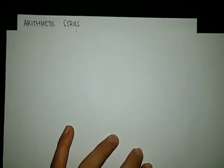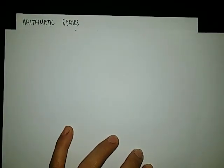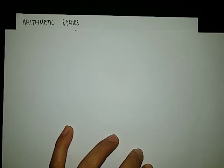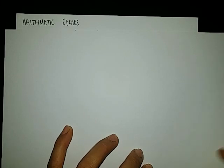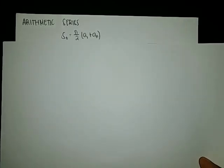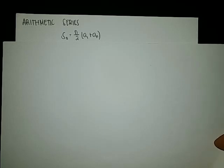In this video, I will discuss arithmetic series. Arithmetic series is an indicated sum of an arithmetic sequence, meaning that if we add up all the terms or all the numbers in an arithmetic sequence, that will be the value of our arithmetic series. The value of an arithmetic series can be computed using the formula: S sub n is equal to n over 2 times the quantity of A sub 1 plus A sub n.